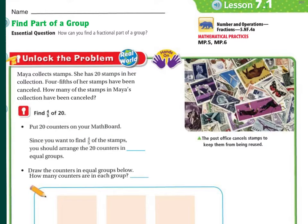You could use counters from the back of the room, or you can use your fractional tiles. Since you want to find four-fifths of the stamps, you should arrange the 20 counters into how many equal groups? If you said five, because the denominator is five, then you were correct. The answer is five. So, you're going to arrange them into five equal groups.